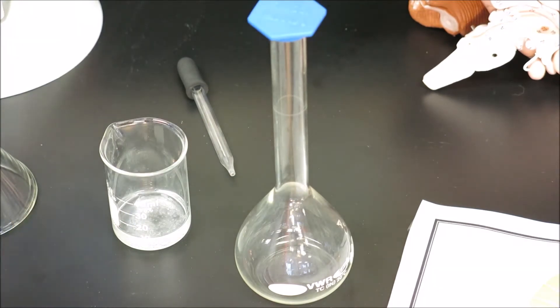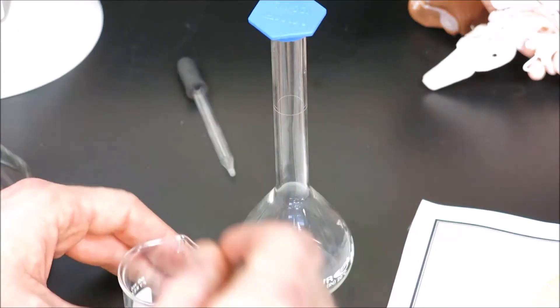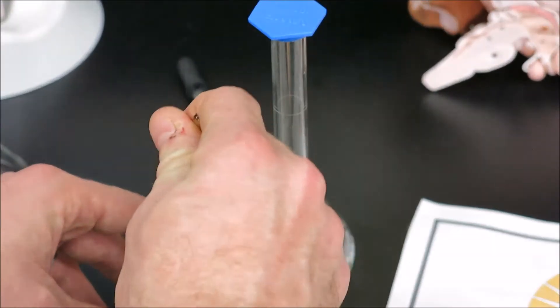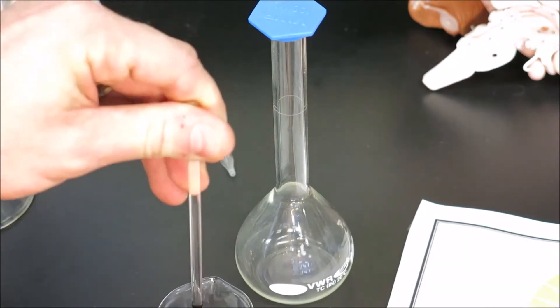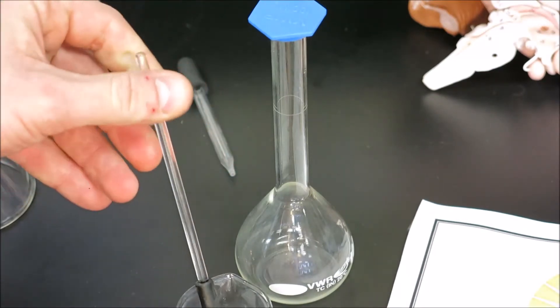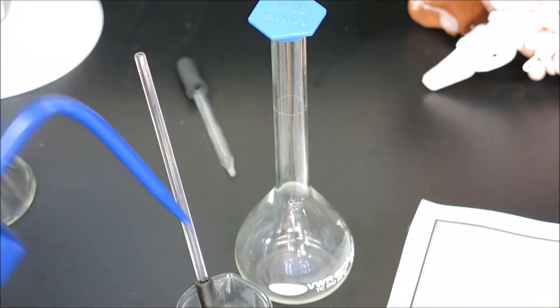Once that is finished, our weigh boat is clean and all the solid is now in the small transfer beaker. We can stir that using the rubber policeman and add a little more water to help the dissolving process.